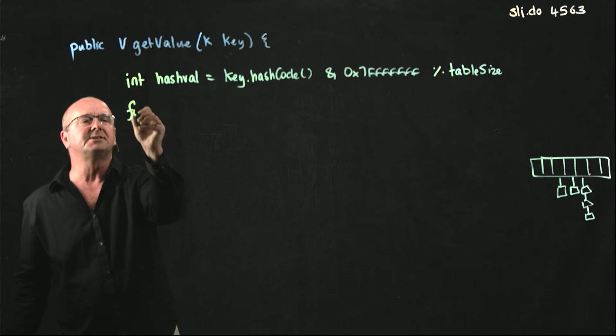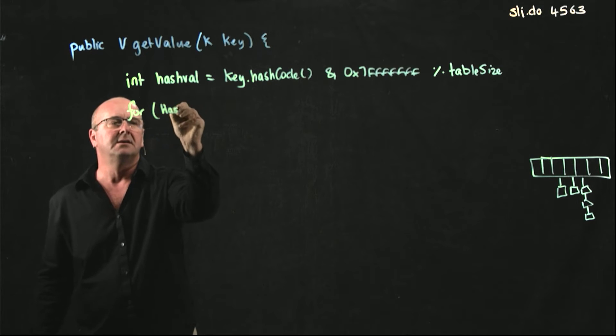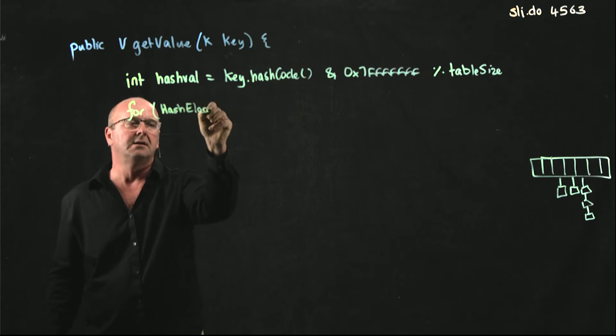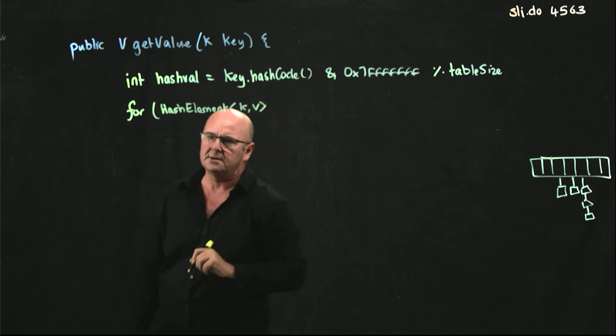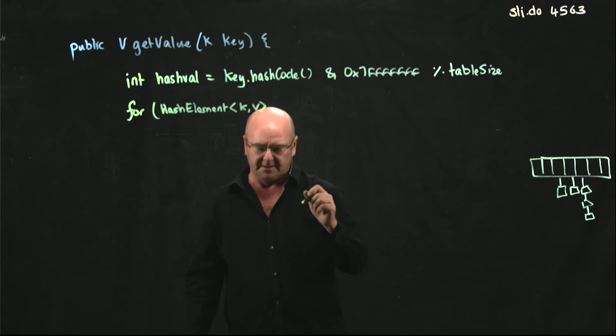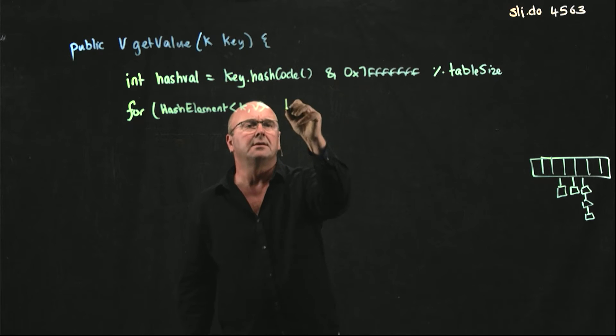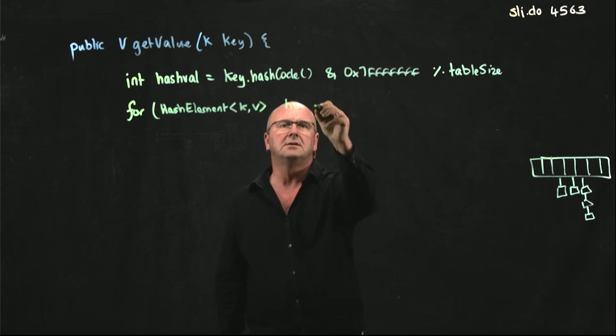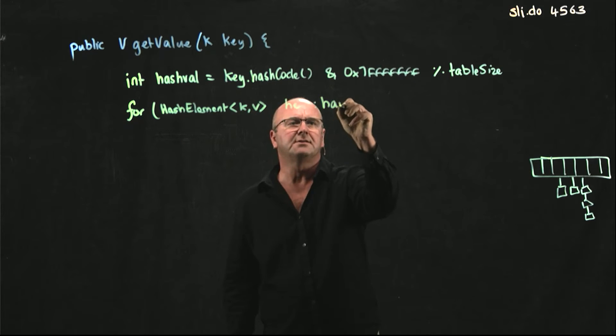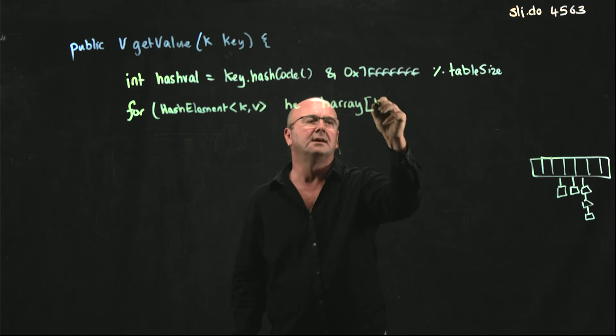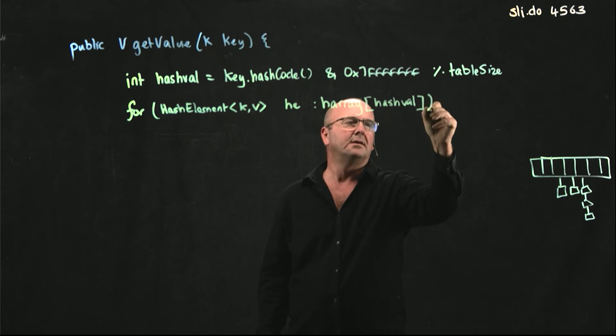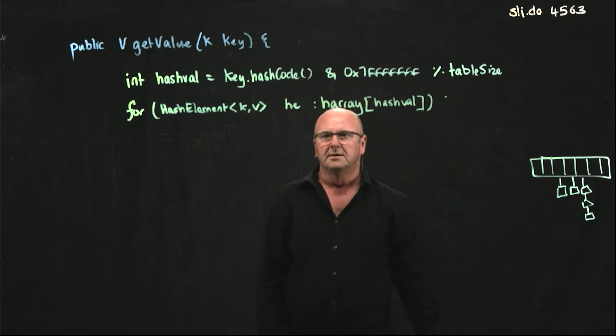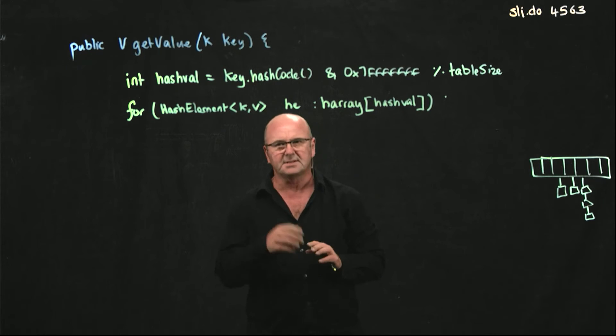And so all we're going to do is just iterate. We're going to iterate through our linked list. Let's get our hash elements in h array hash value. So this is using our iterator that we wrote when we wrote our linked list, right? This is why we wrote our iterator.